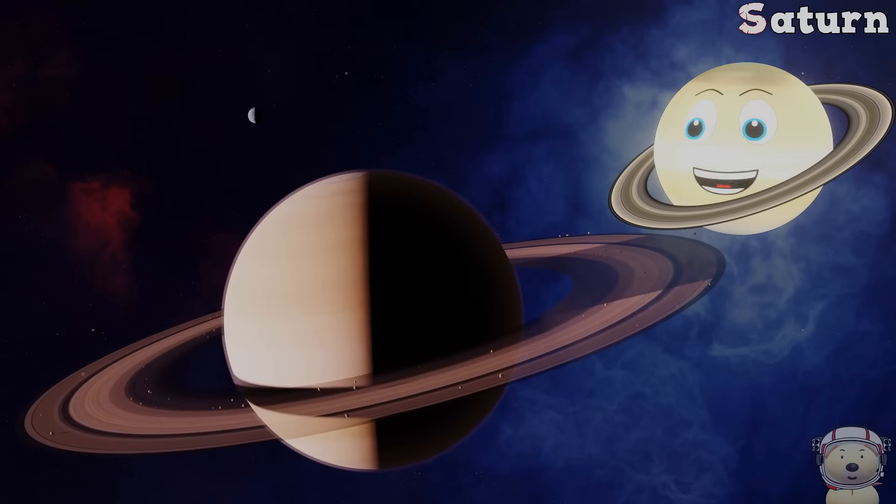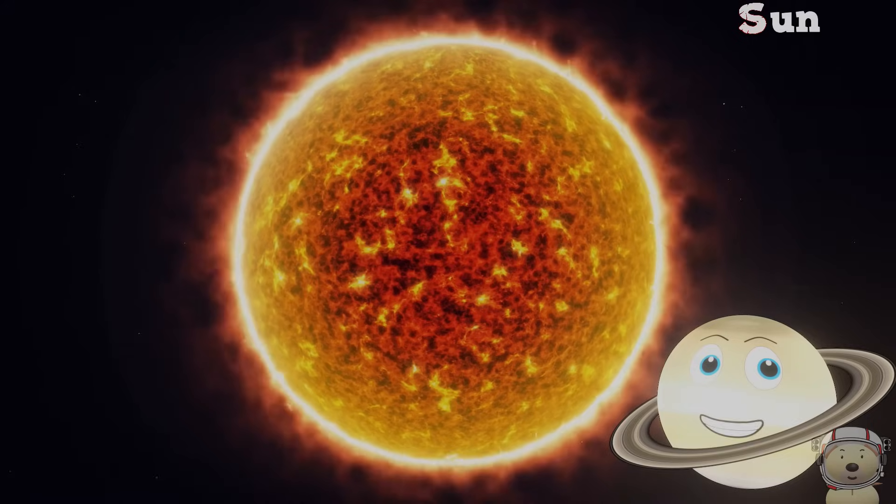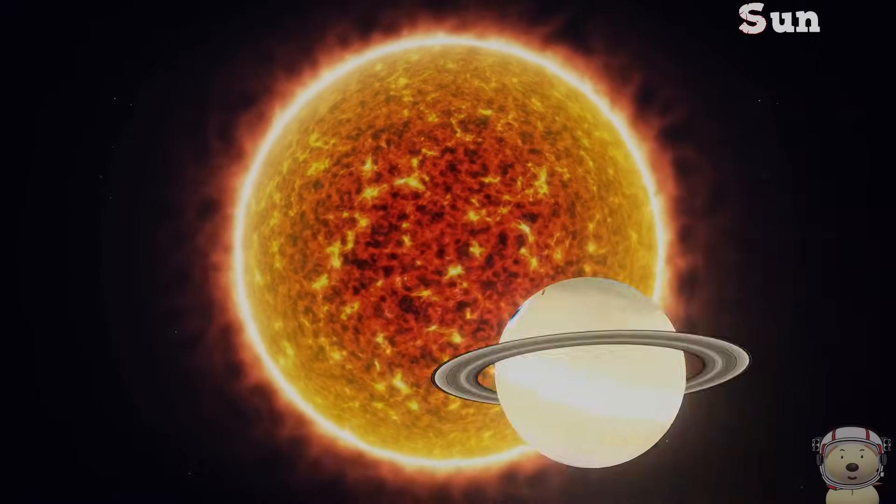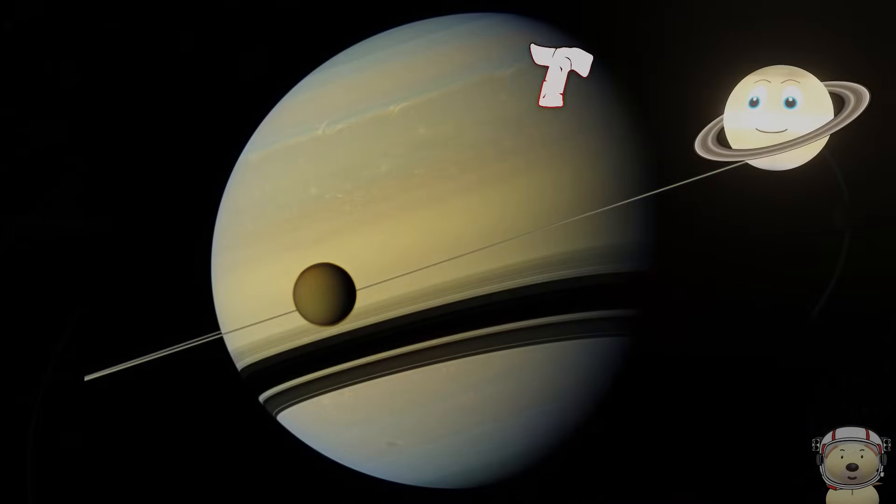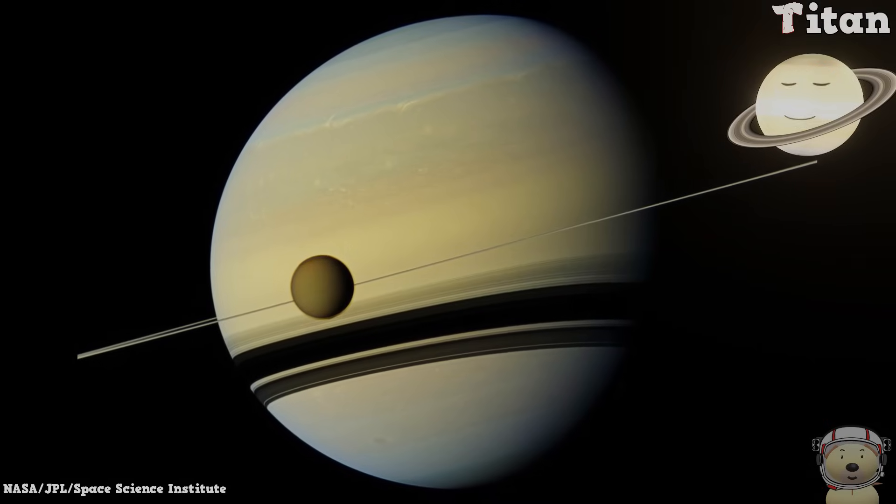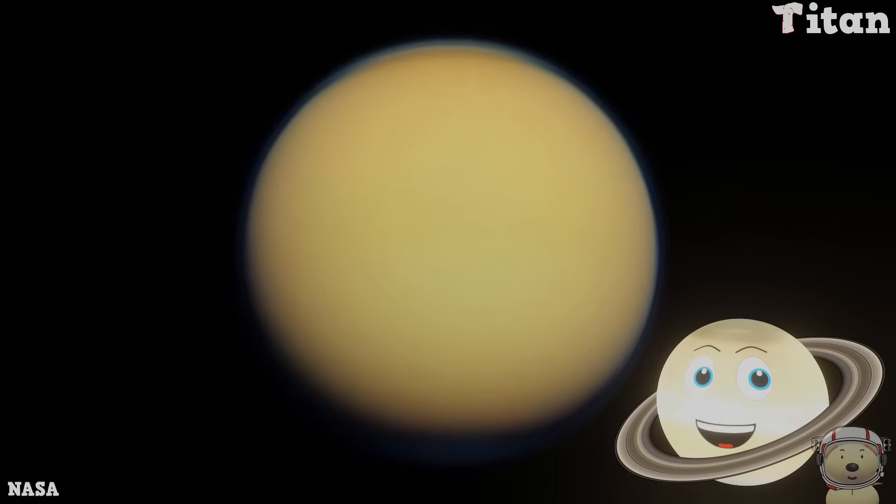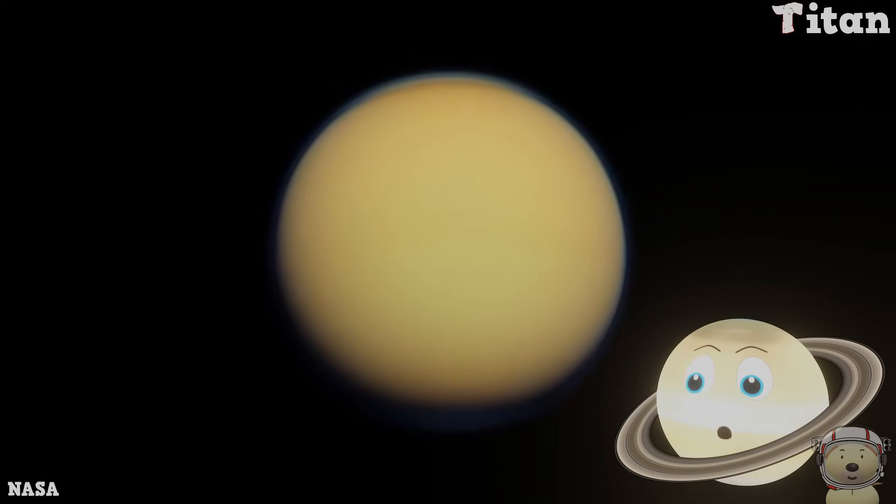S is for Saturn, but also for Sun, star of our system, he's number one. T is for Titan, my biggest moon, has an atmosphere, you should visit it soon.